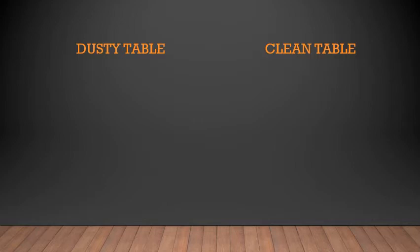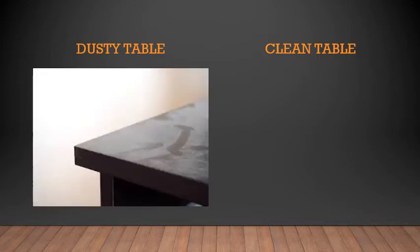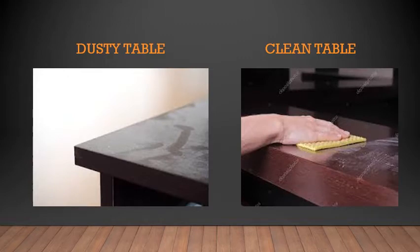When you look around the place you are sitting or standing, you would see a table. Here you can see a dusty table and a clean table. A dusty table means there is a layer of dust present on it, which is not good. If dust is present, that means you have not been cleaning. So we should keep all the things around us clean, and we should keep ourselves clean.